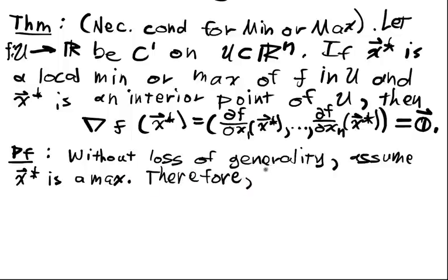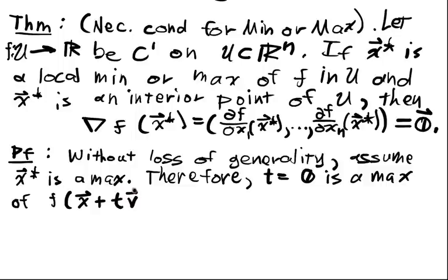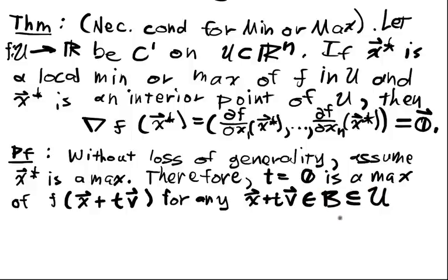Therefore, t=0 is a max of f(x+tv) for any x+tv living in the ball that I can fit, since it's an interior point, around x contained in U.